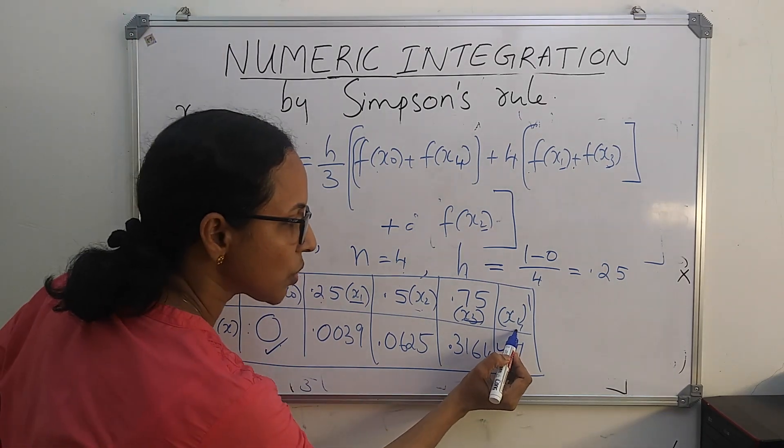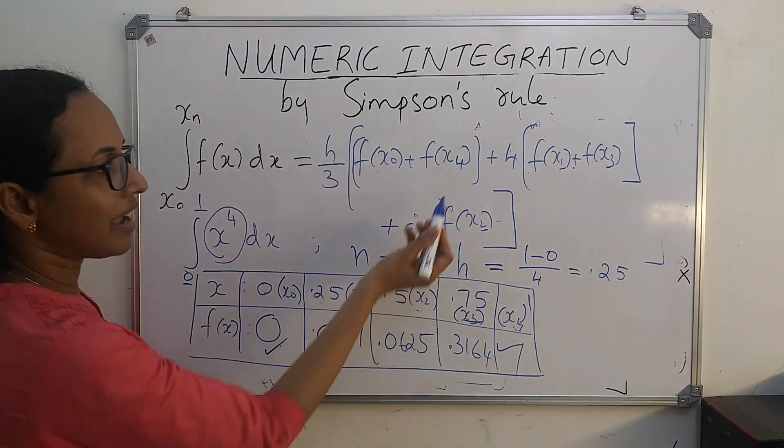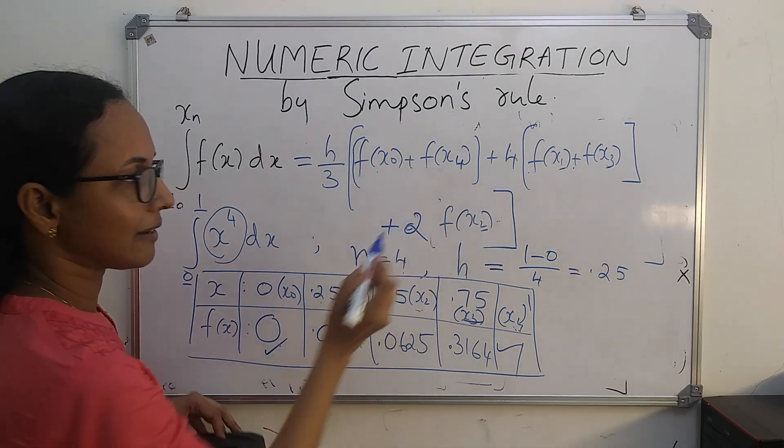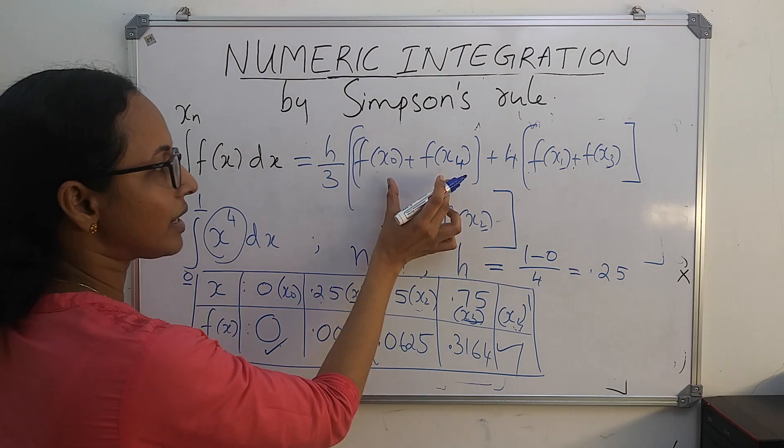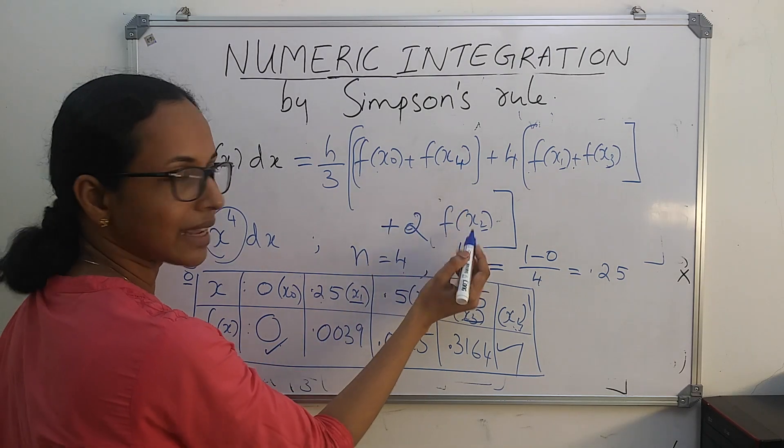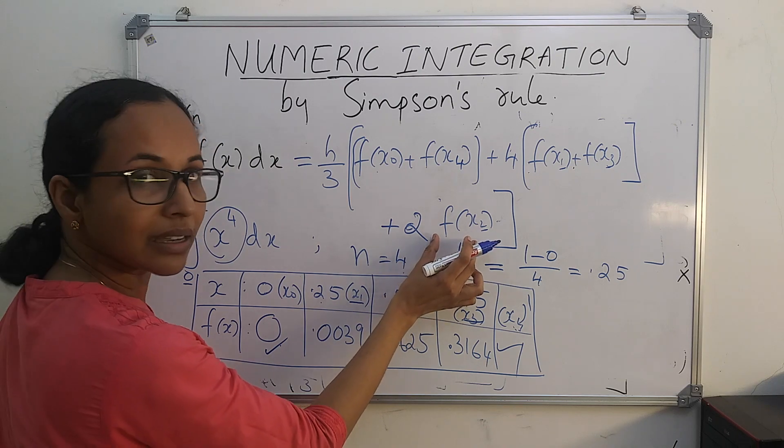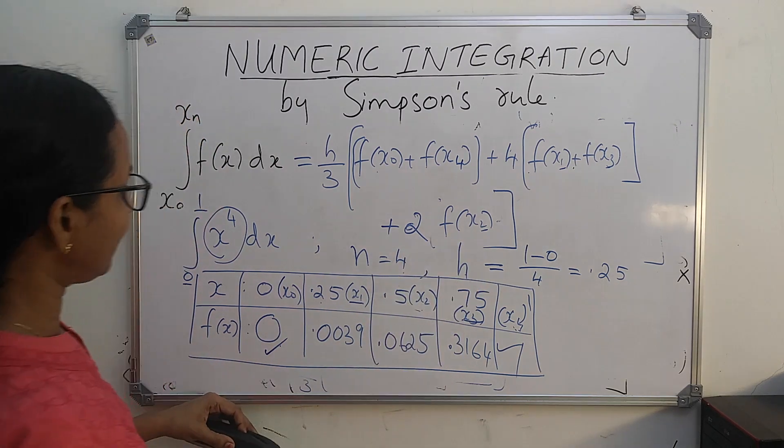This 4 is also an even number, but we have already included it in the first bracket, so no need to repeat it again. Once you write it here, you cannot write it again. Therefore, there is only one term in the last bracket, 2 into f of x2.